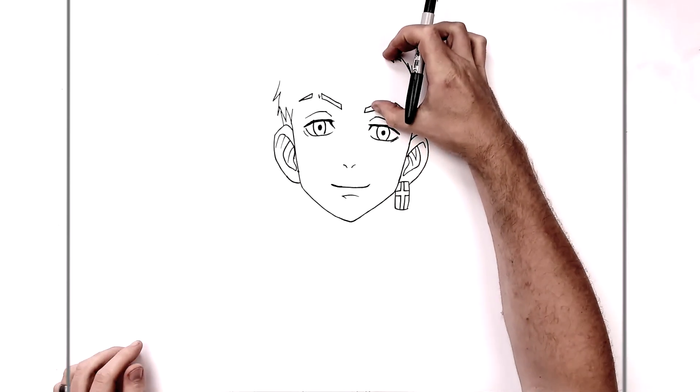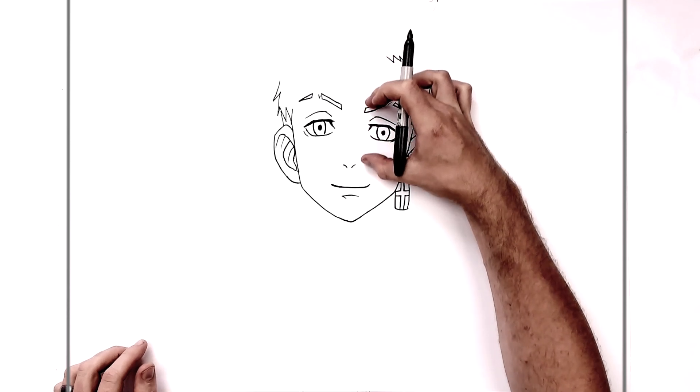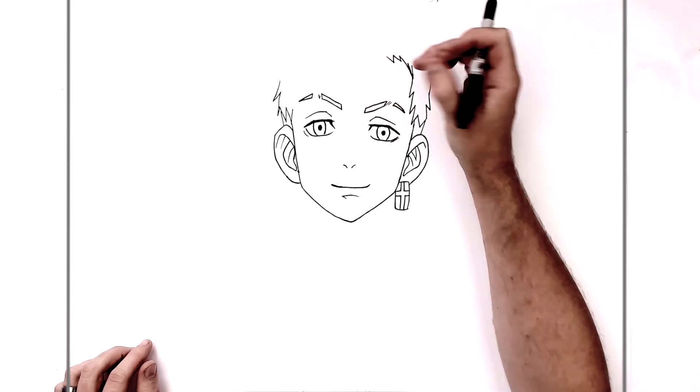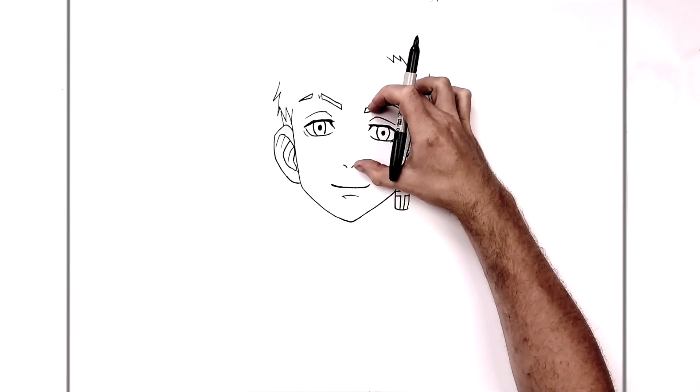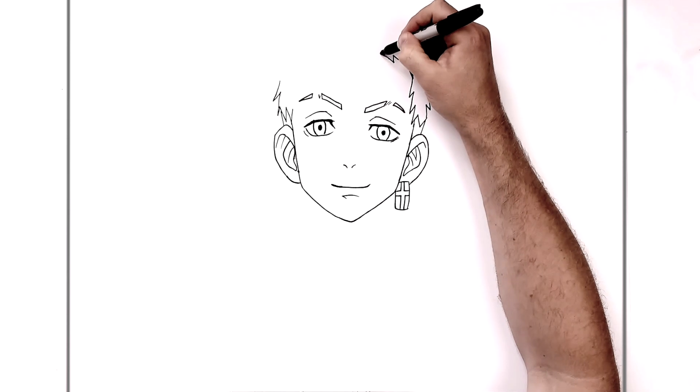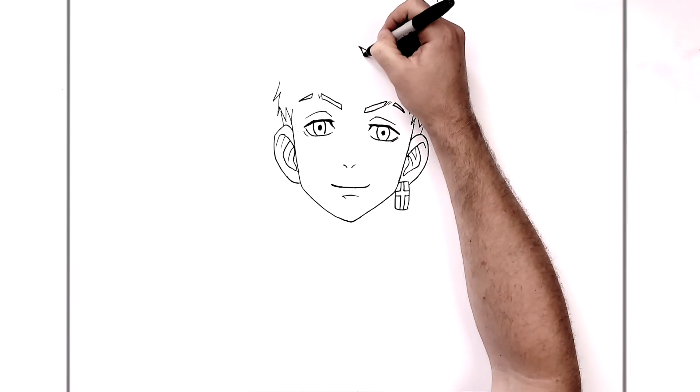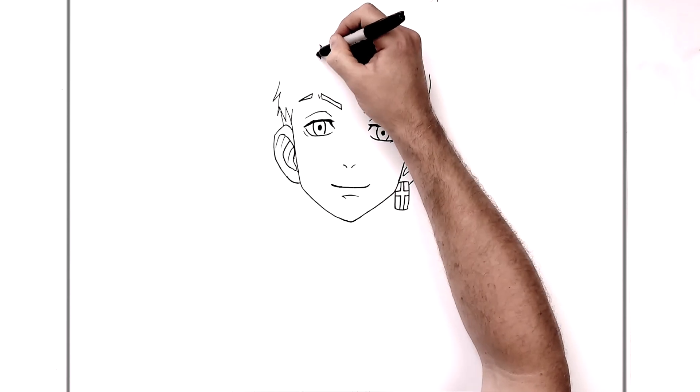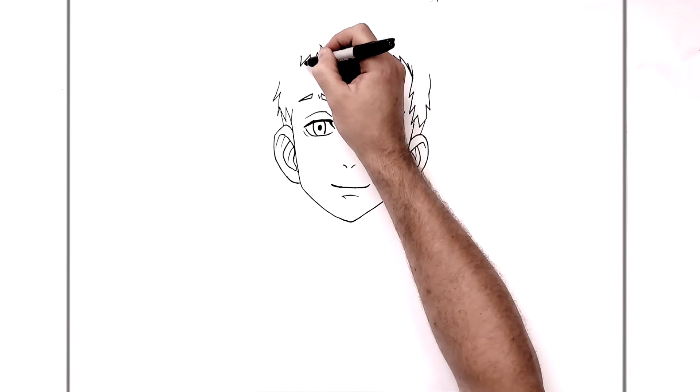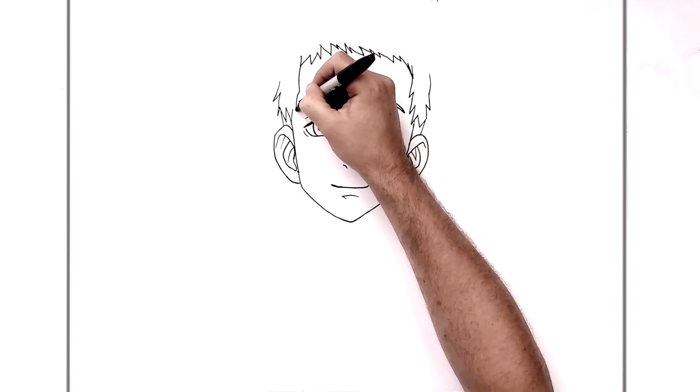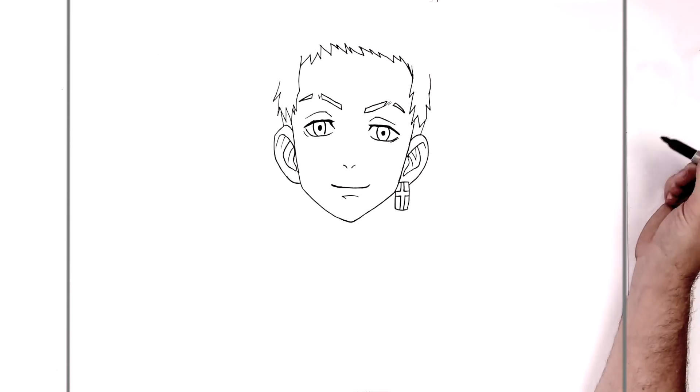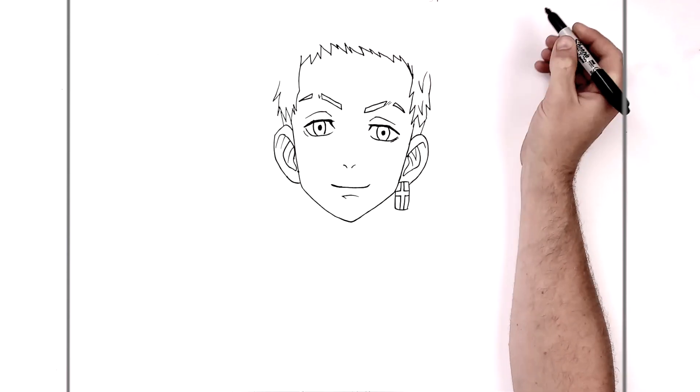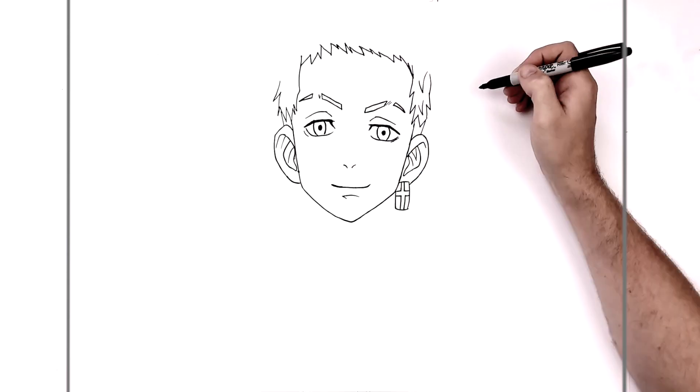So the forehead size is usually, so like eyebrow to the top of the forehead is usually the same as eyebrow to nose, when everything's sort of in proportion. So here to here is about the same as here to here. And then just so you don't make the forehead too big in relation to the rest of his face. And then you just go keep doing spikes across.